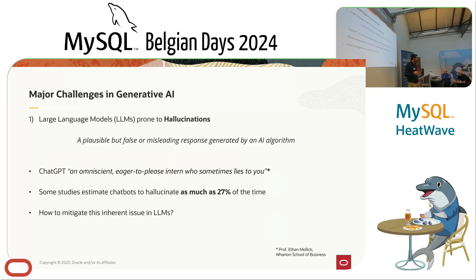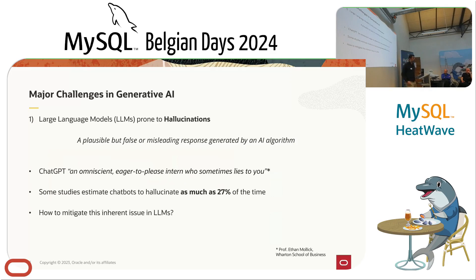If any of you has played a bit with ChatGPT, you've probably noticed how, after a while, it seems like it doesn't know what it's talking about, especially when you ask about something you know. And it will still look somewhat reliable if you didn't know what you asked about. ChatGPT has been described by Professor Ethan Mollick as an omniscient, eager-to-please intern who sometimes lies. The only thing I would change is that 'sometimes' might be a bit reductive. In fact, some studies estimate chatbots lie as much as 20% of the time.